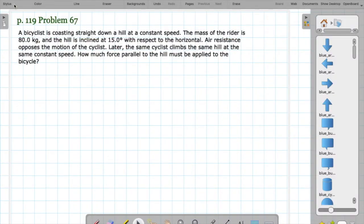Here's a simple inclines problem. We have a bicyclist coasting straight down a hill at a constant speed.